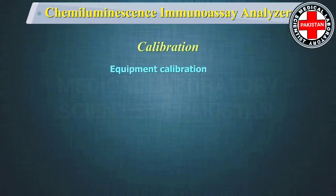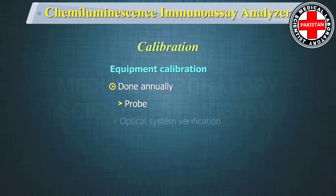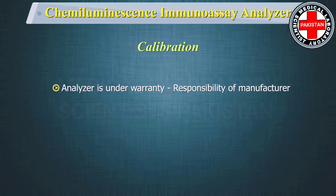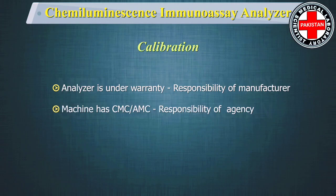Equipment calibration is to be done annually by the technical support team of the manufacturer, covering probe, optical system verification, and wash zone aspiration as per the manufacturer's format. If the analyzer is under warranty, this is the responsibility of the manufacturer. If the machine has a maintenance contract, it is the responsibility of the agency depending on the terms and conditions. Check with your tech support for the calibration schedule and the components to be calibrated.